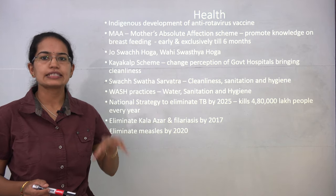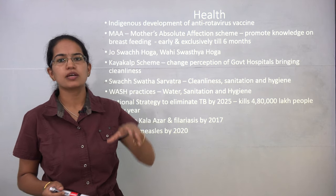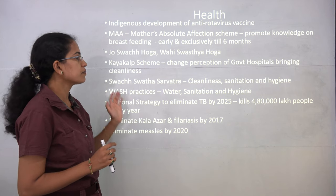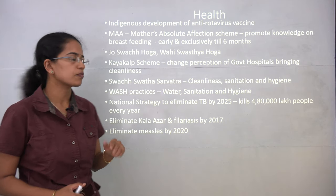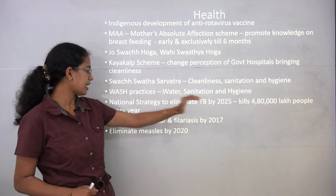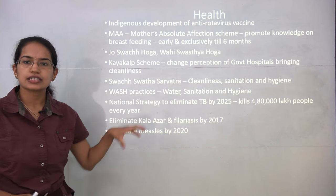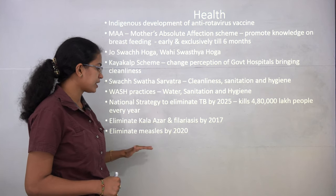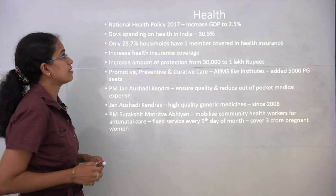The Kayakalp scheme is very important — it talks about rejuvenating government hospitals by improving cleanliness and the surrounding areas of government hospitals. The three-pronged mission adopted is: cleanliness, sanitation, and hygiene — the WASH practices. The national strategy is to eliminate TB by 2025, which is considered the biggest killer in India. Other targets include eliminating Kala Azar and Filariasis by 2017 and eliminating Measles by 2020.